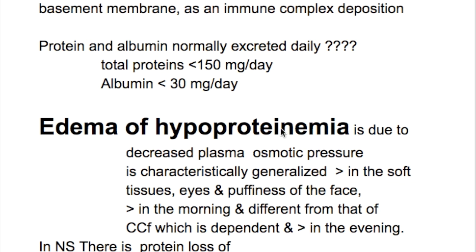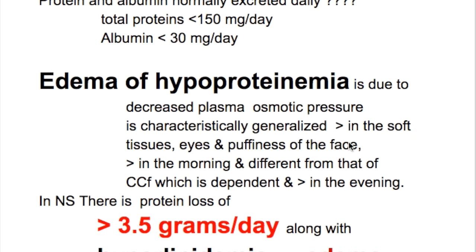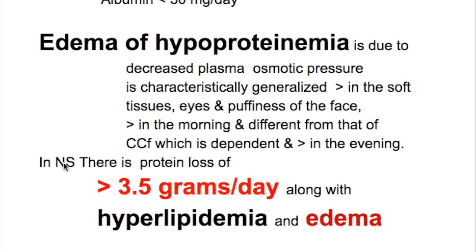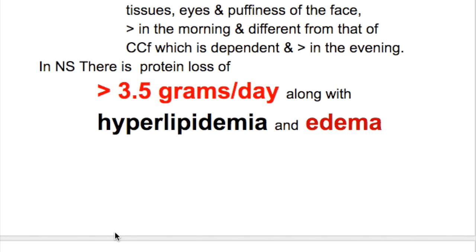Edema of hypoproteinemia due to decreased plasma osmotic pressure is characteristically generalized, more in soft tissues — the eyes and puffiness of the face — more in the morning, and different from congestive cardiac failure edema, which is dependent and worse in the evening. In nephrotic syndrome, more than 3.5 grams per day of protein are lost, especially albumin, along with hyperlipidemia and edema.